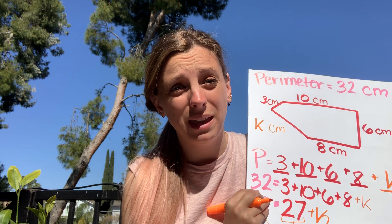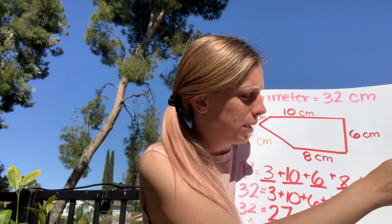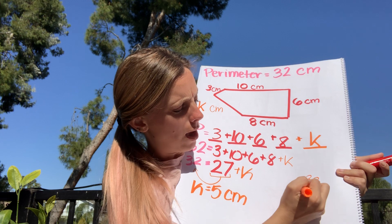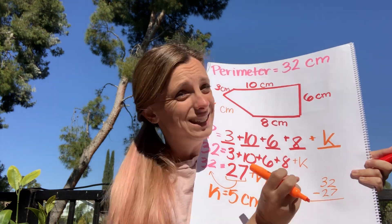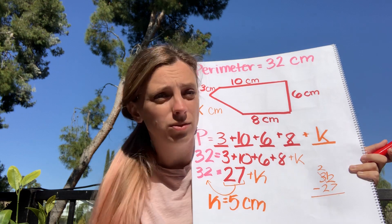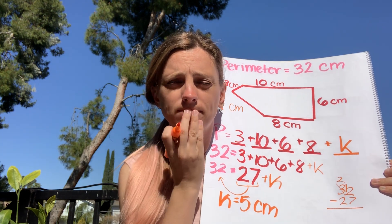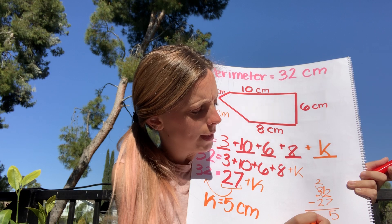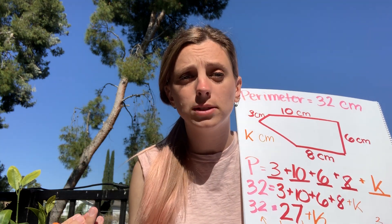What if that problem was really big and I didn't feel comfortable counting on my fingers? It's a 'how many more' problem, so I can subtract. I take 32 and subtract 27. I need to borrow — that turns my ones digit into a 12. 12 minus 7 is 5, and 2 minus 2 is nothing. I get five centimeters again. This is a great way to check your answer — if you're not sure you got it right, try doing it another way.